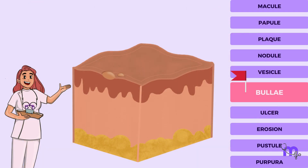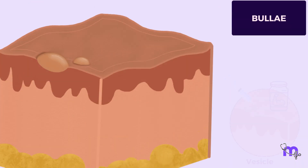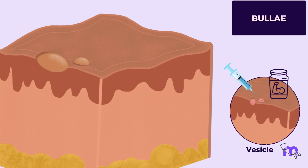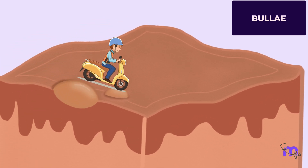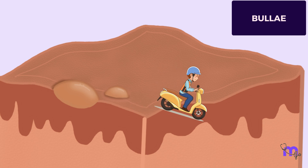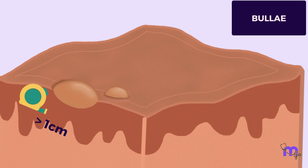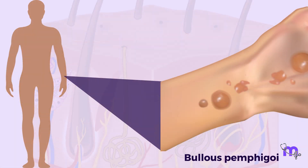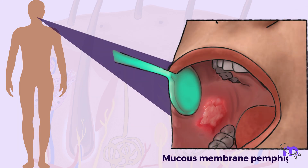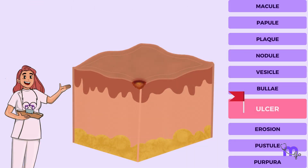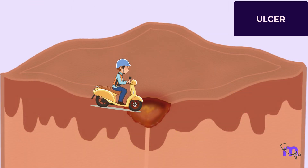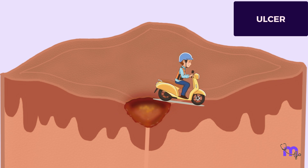This is a bulla, which is like a vesicle on steroids — a large fluid-filled blister always wider than one centimeter in diameter. Bullous pemphigoid is a skin condition that can cause bullae, while mucous membrane pemphigoid can cause them inside the oral cavity.